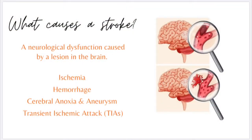So what exactly causes a stroke? A stroke is when there's a neurological dysfunction caused by a lesion in your brain. The picture on the right does a good job showing that lesion. There are different types of strokes. The first one, ischemia, can result from a brain embolism. A hemorrhage is probably the most common, at about 13% of strokes. An aneurysm can result from that hemorrhage and can have similar treatment strategies.